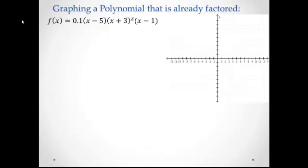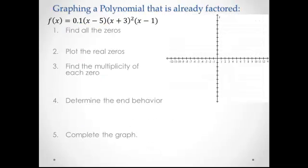So let's look at our first example. For this one, for our function, when we find all the zeros, it's already factored completely for us, so we don't have to do any extra steps there. We're going to go ahead and just identify the three zeros, and then once we have those, we can just plot those on our graph. So 5, negative 3, and 1, put those on the x-axis.